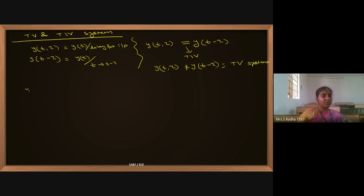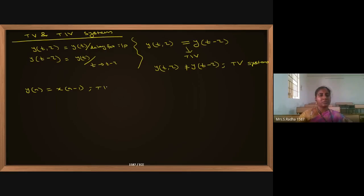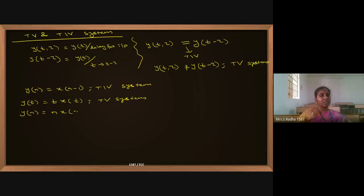Example: y(n) = x(n−1) — following the full procedure, this is a time invariant system. y(t) = t·x(t) — this is a time variant system. y(n) = n·x(n) — same in discrete time, also time variant. y = x(kn) — this is also a time variant system.